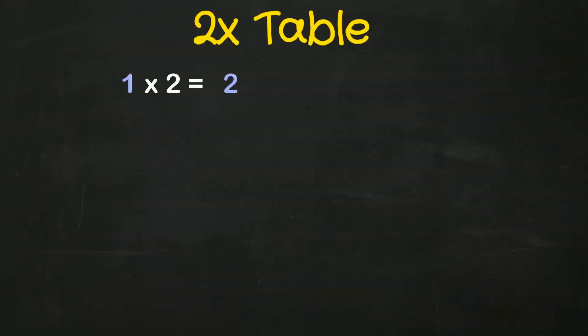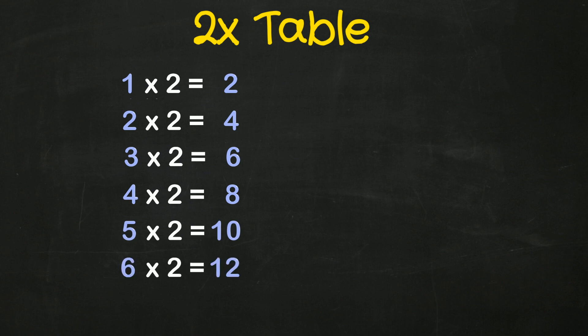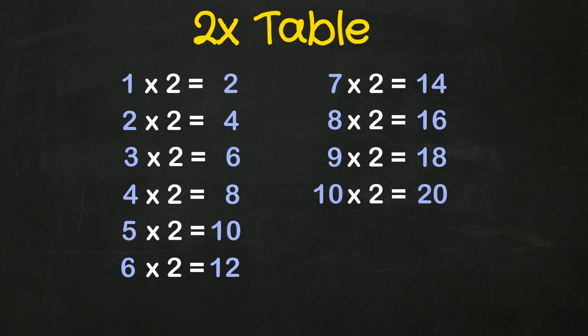1 2 is 2, 2 2s are 4, 3 2s are 6, 4 2s are 8, 5 2s are 10, 6 2s are 12, 7 2s are 14, 8 2s are 16, 9 2s are 18, 10 2s are 20, 11 2s are 22, 12 2s are 24.